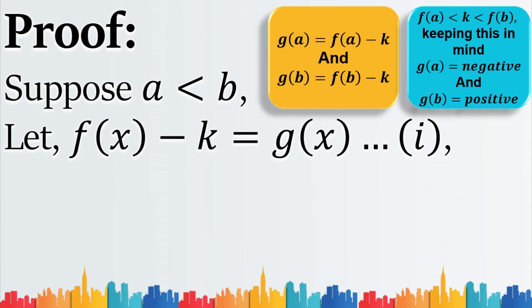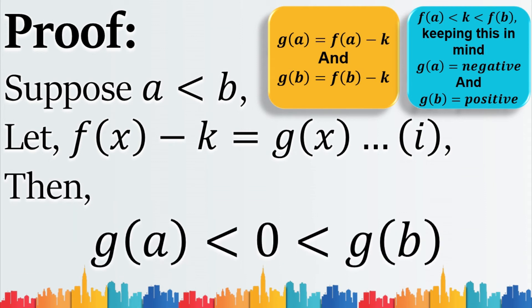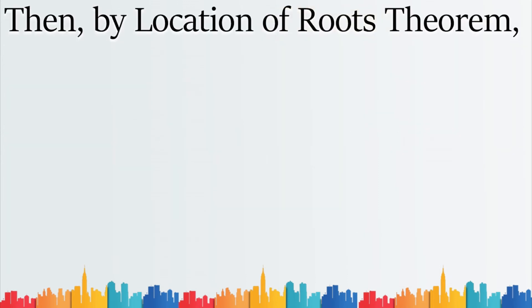Because K is greater than F(a), the value of F(a) minus K must be negative. And similarly, since K is less than F(b), the value of F(b) minus K must be positive. We can write these two observations as a single inequality: G(a) is less than zero, which is less than G(b). In other words, G(a) is less than zero and G(b) is greater than zero.